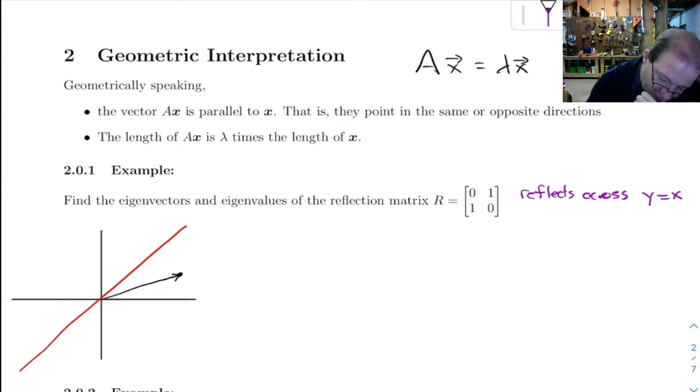This is going to reflect it across the line up to here. So are there any vectors that this would not change the angle of? And there's one that I think is pretty obvious. If you take a point that lies on this line,